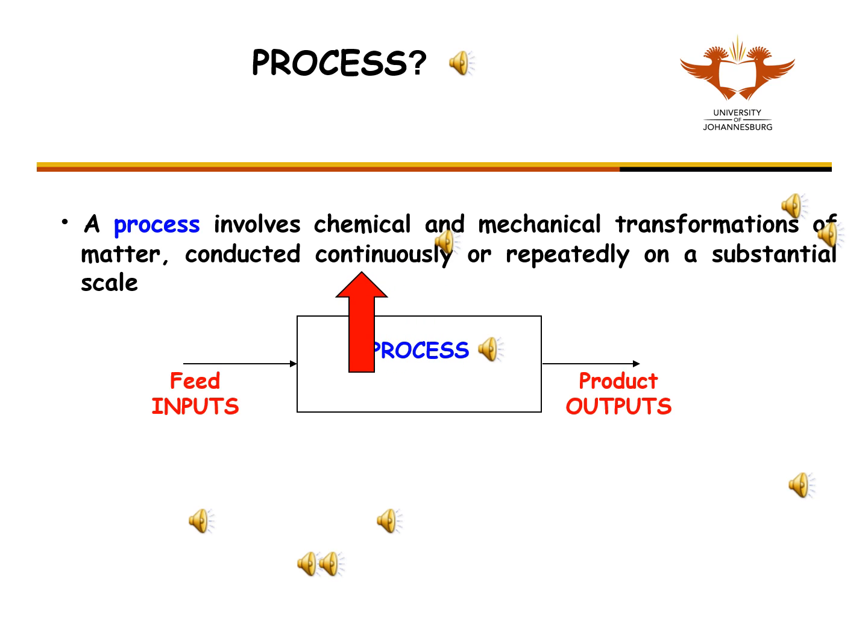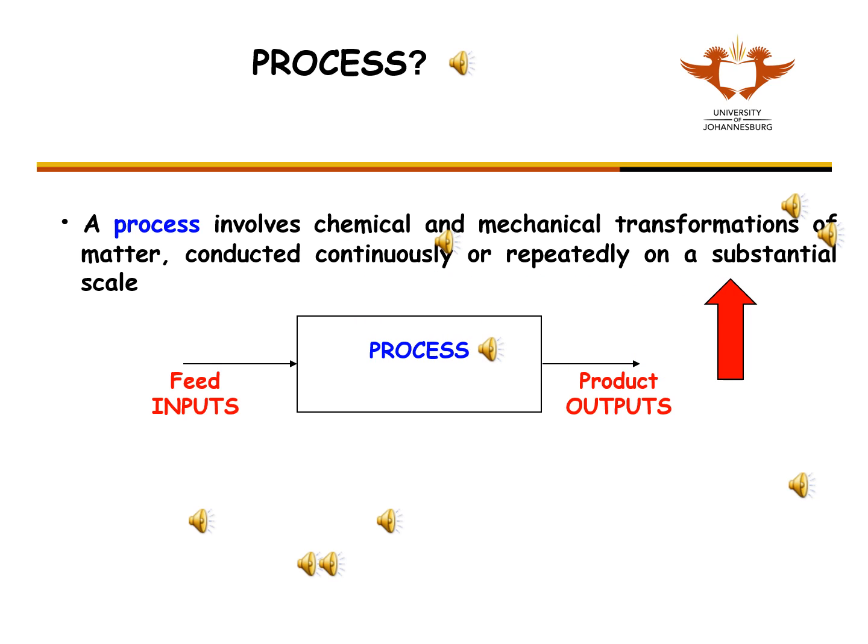Continuous means that the same process is happening all the time as the plant runs 24 hours a day. A substantial scale means that a lot of material is handled every day. This is what chemical engineers are good at organizing.